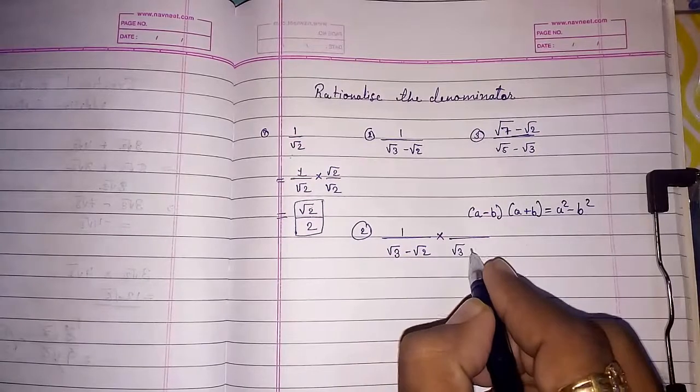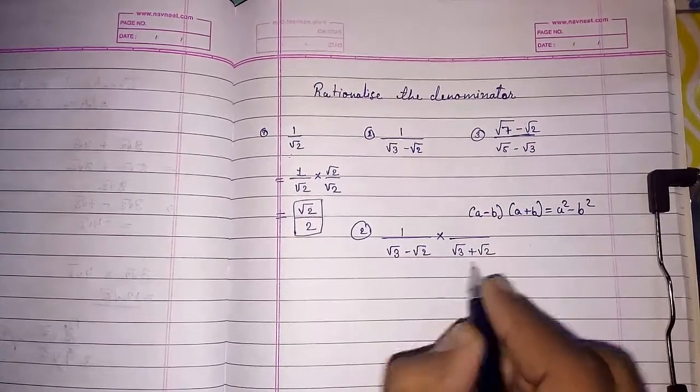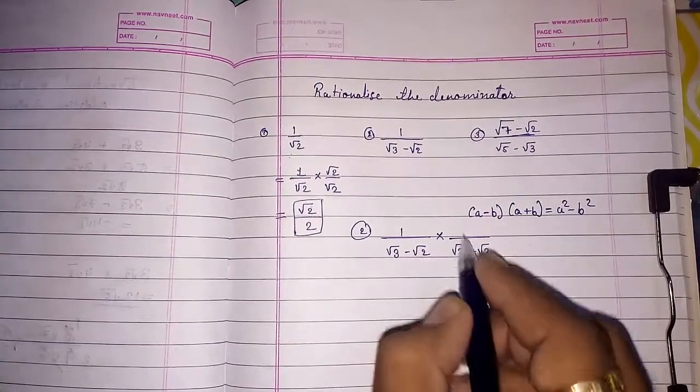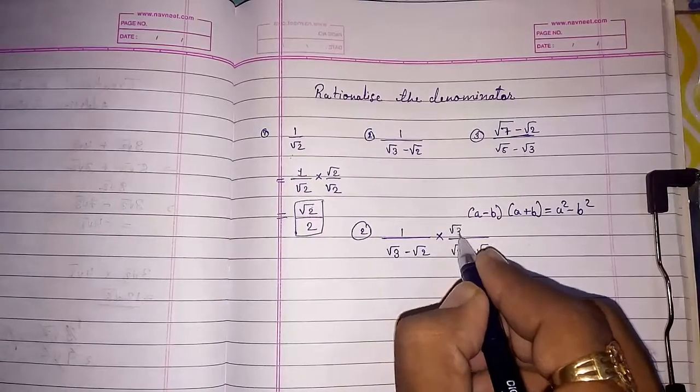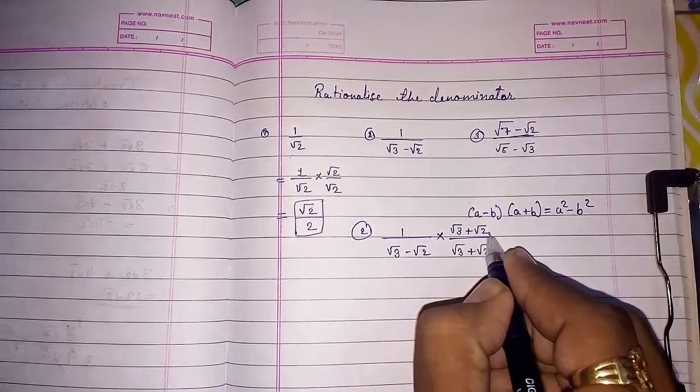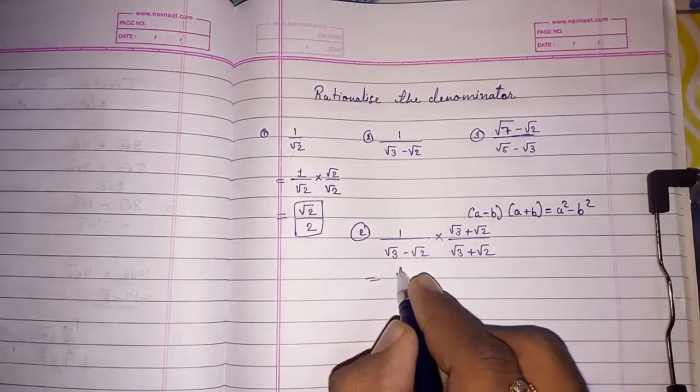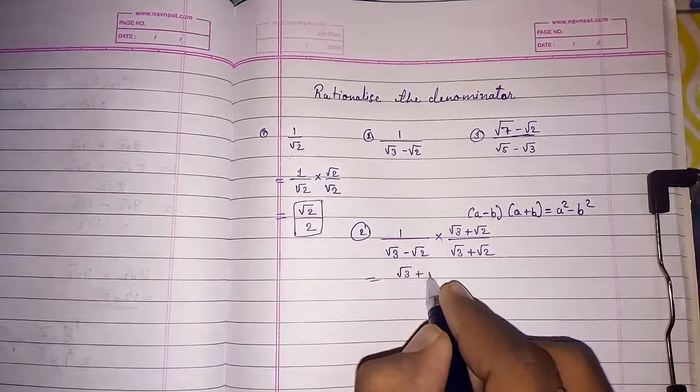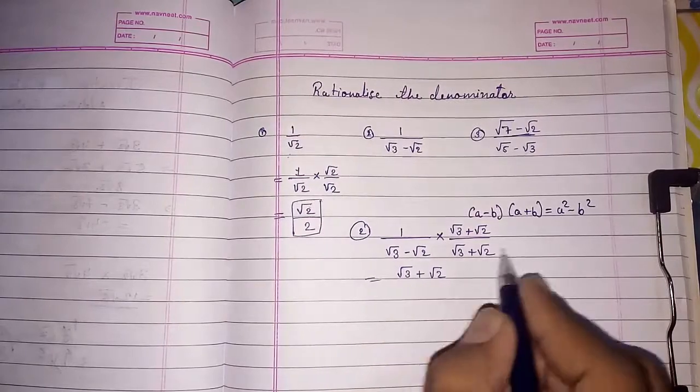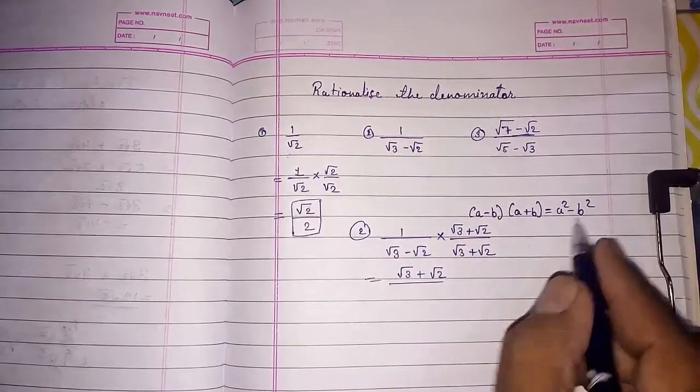Root three. Minus is there, so we are going to multiply with plus. Root three plus root two. So, in the numerator also we have to multiply with the same number. One into this two. You will get the same number, root three plus root two. Now, in the denominator by this identity,